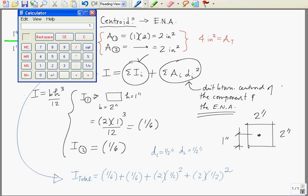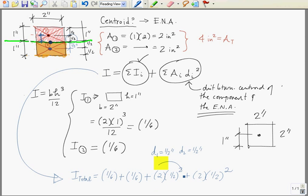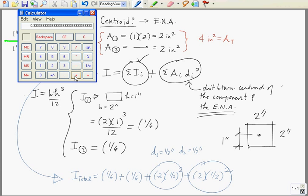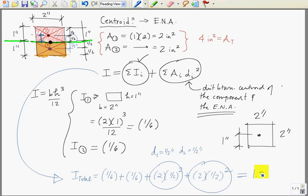Alright, just for kicks, let's put it in the calculator. 1 divided by 6 equals, I have two of them, so I'm just going to multiply it times 2. Now I'm going to add 1 half squared is the same thing as saying 1 over 4, 2 over 4 is 1 half. So I'm going to add 1 half, plus 1 half, and that's actually plus 1. So plus 1 equals 1.3. The units are inches to the fourth.